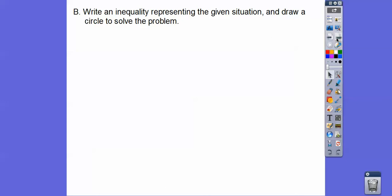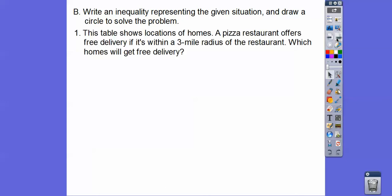Let's try a couple of applications. Write an inequality representing the given situation, and then draw a circle to solve the problem. So this table here is showing the locations of homes. A pizza restaurant offers free delivery if it's within a three-mile radius of the restaurant. We'll call it RR for restaurant. Which of the homes would get a free delivery?